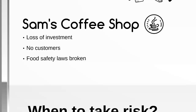It could be that he breaks a food safety law — maybe he's leaving his cakes out too long, they've been going stale, and the food safety standards people come in and shut him down. There's also the risk that customers or employees might steal his products — for example, if the cooler with fizzy drinks is too close to the entrance, thieves could come off the street and take a can.